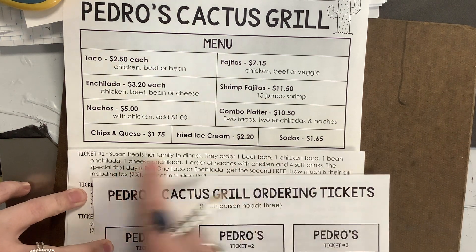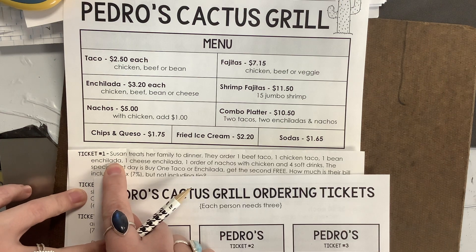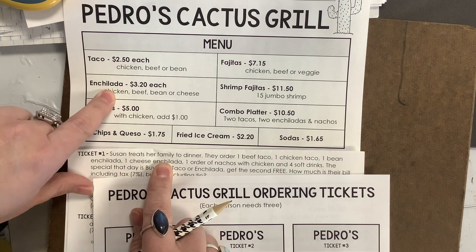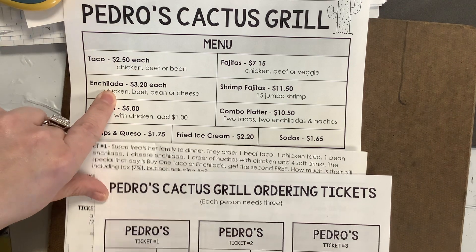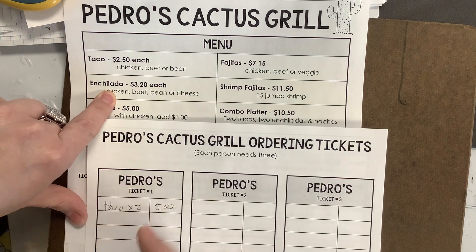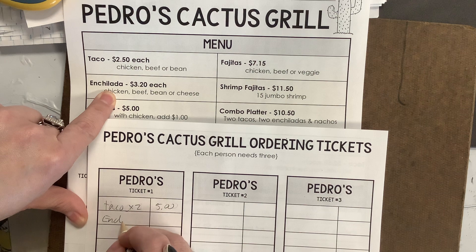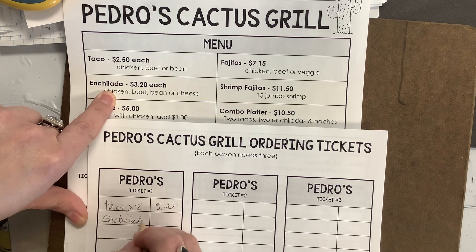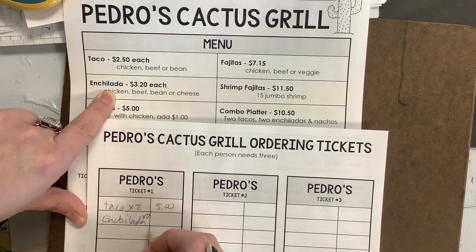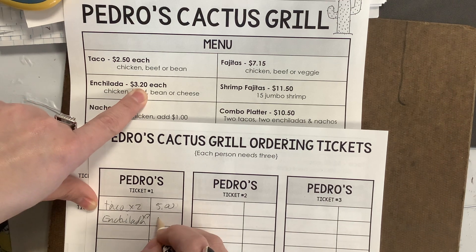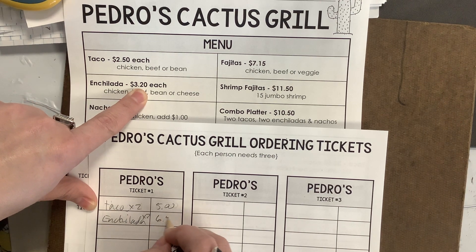Next, one bean enchilada and one cheese enchilada — so we need two enchiladas. On the ticket I'm going to write enchiladas times two. Two of those is going to be $6.40.